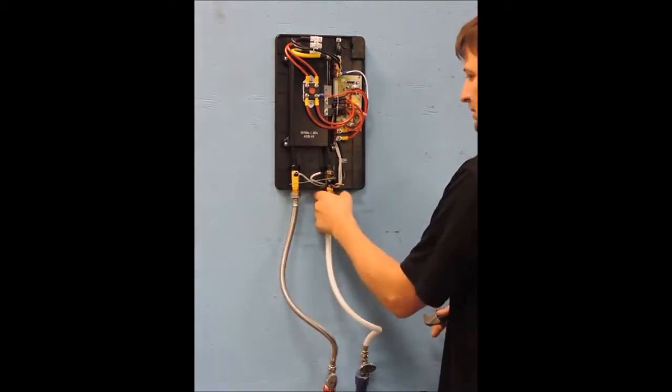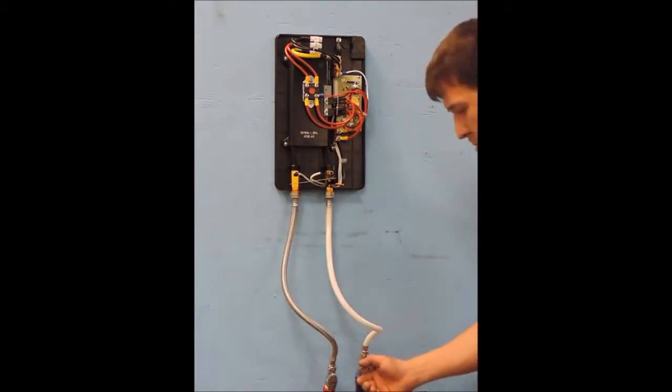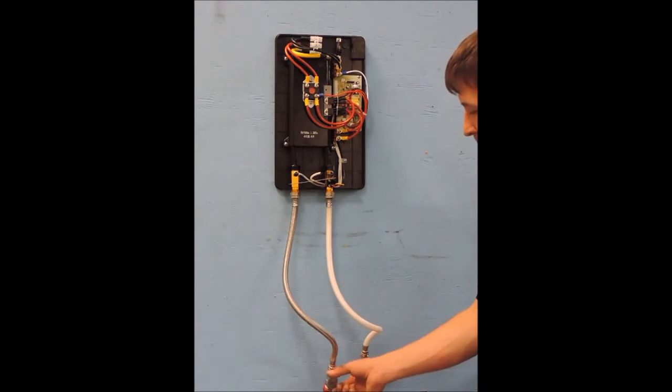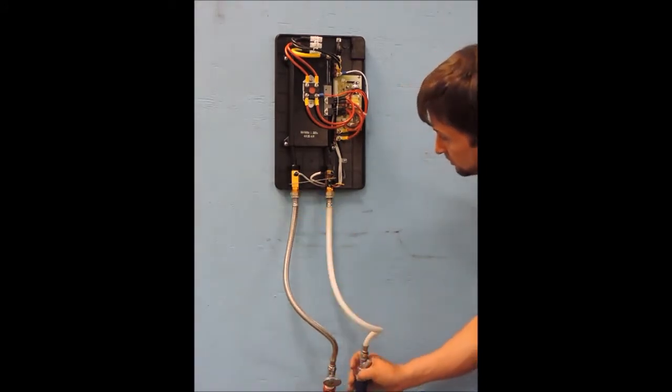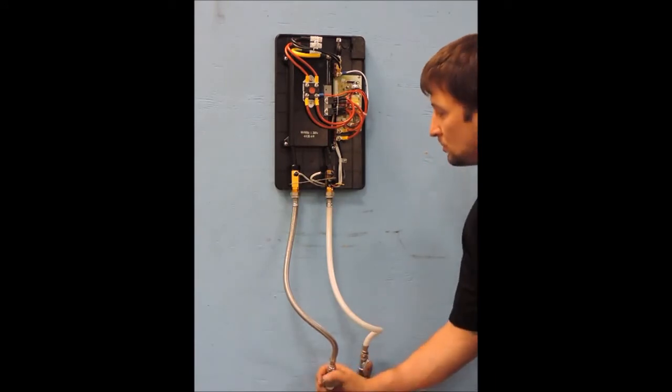Run water through the heater for a few minutes to purge all air from the system and then shut the flow at the faucet to pressurize your system. At this point, check for and fix any leaks. If no leaks are present, then please move on to the next step.